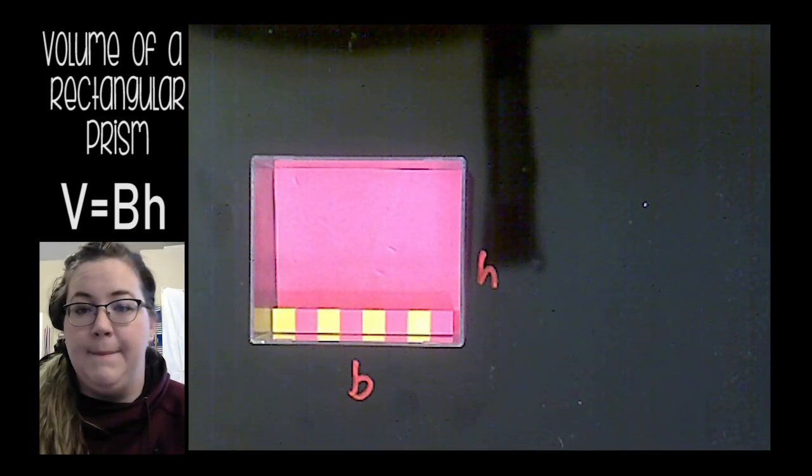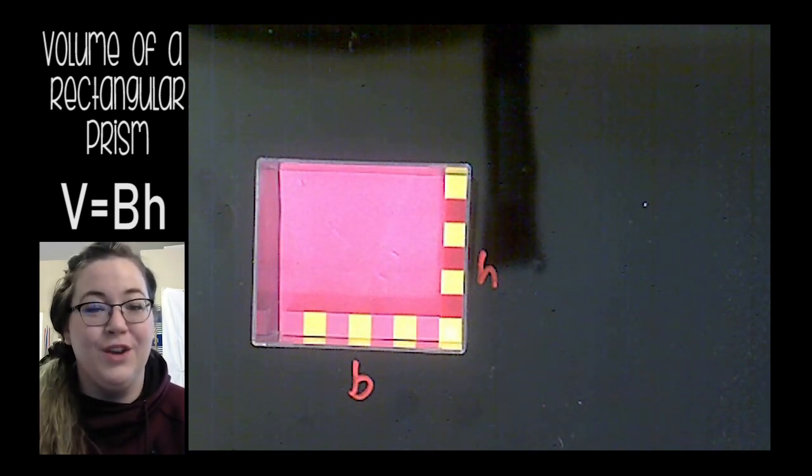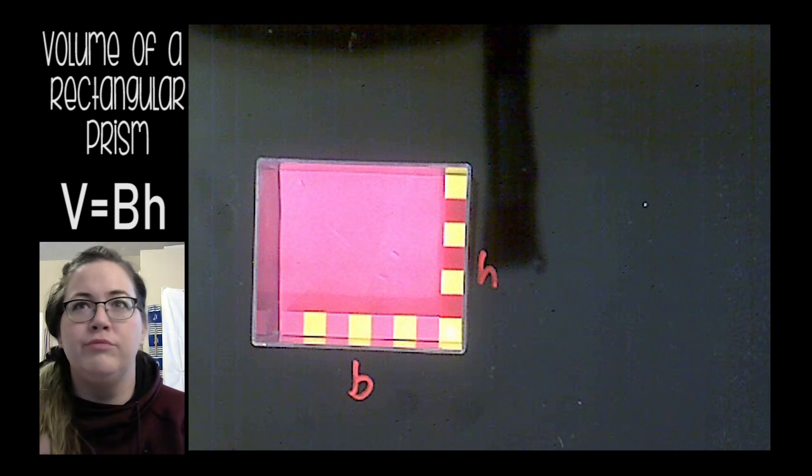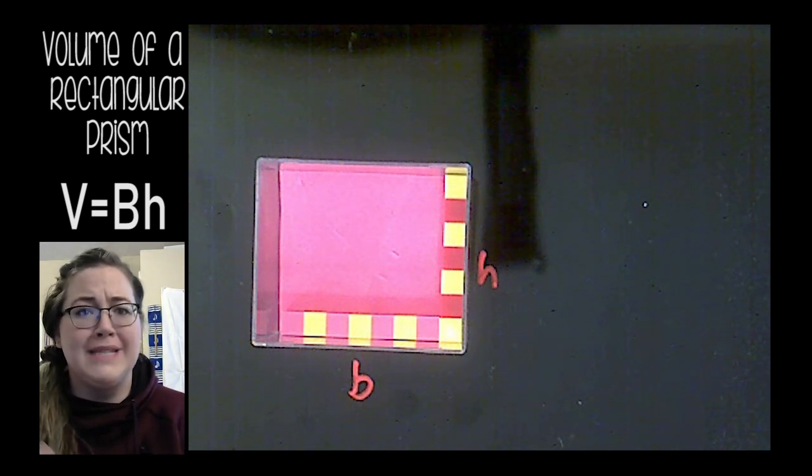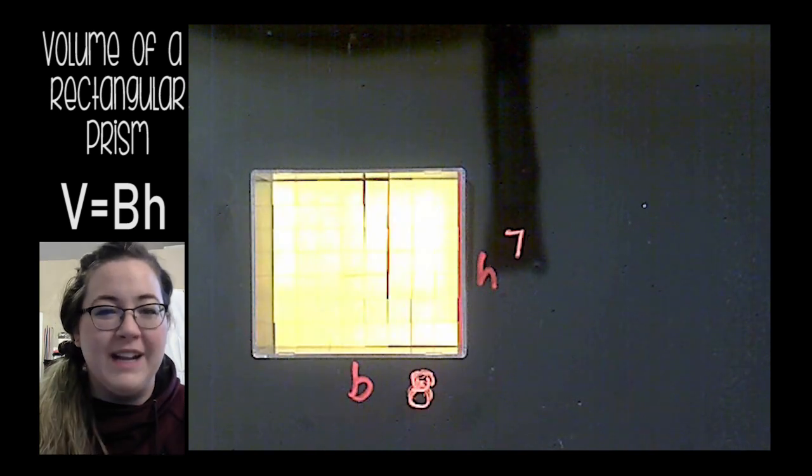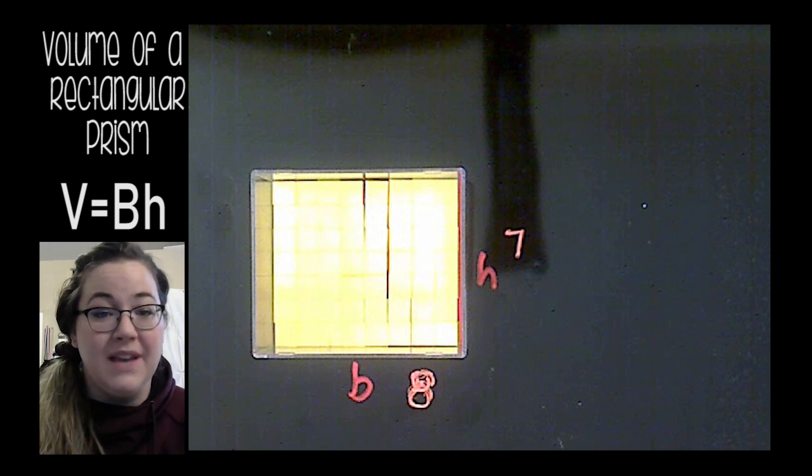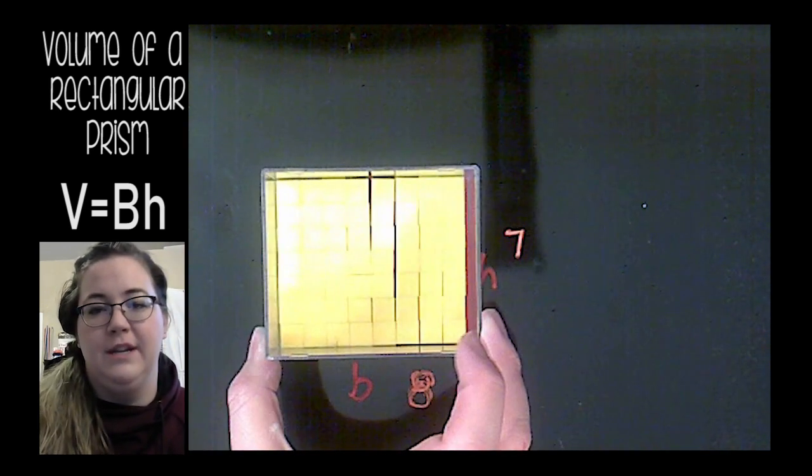Okay, so here you can see my base is eight cubes long and my height is seven cubes long. So area equals base times height, so eight times seven. If my rectangle base is eight and the height is seven, eight times seven is 56. I have 56 cubes in here.